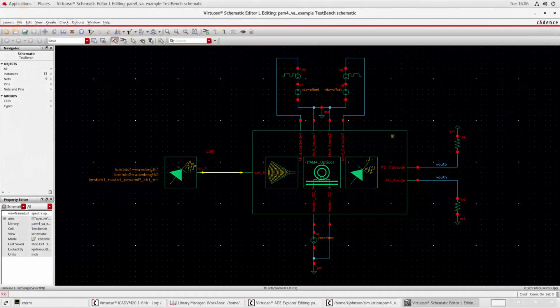As an example, here is a PAM-4 transceiver circuit created in Cadence Virtuoso with photonic VeriLogA components made with the CML compiler.